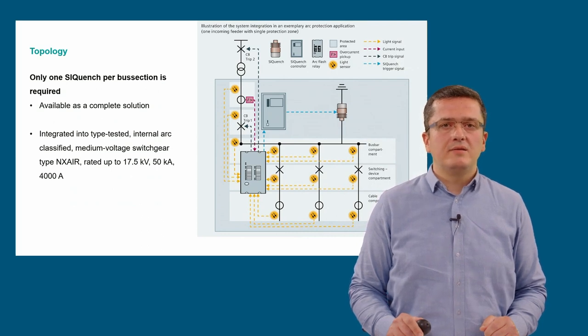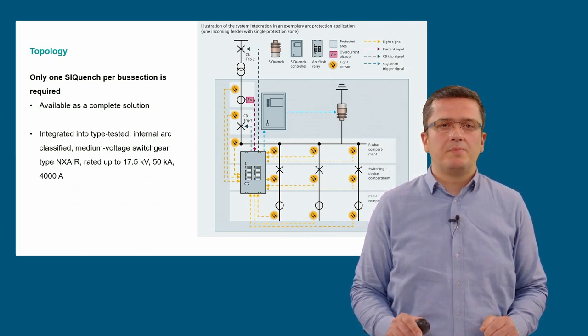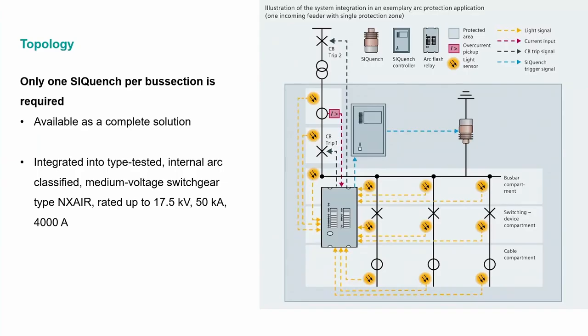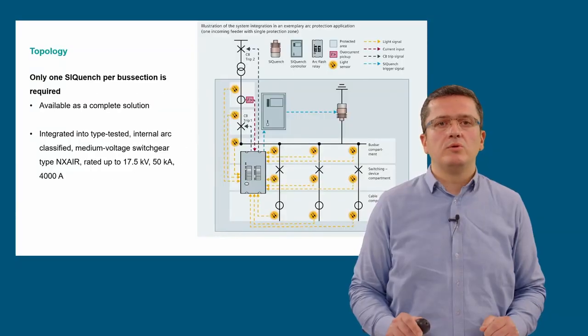SIQuench is located as fixed mounted in the bus bar compartment. That is why only a single SIQuench per bus section is required and enough for the protection. As of today, SIQuench is available as a complete integrated solution into the internally classified air-insulated medium voltage switchgear type NXAIR up to and including 17.5 kV and 50 kA.